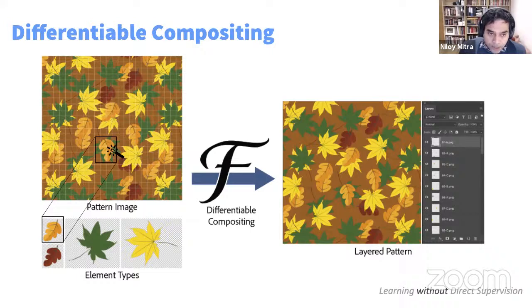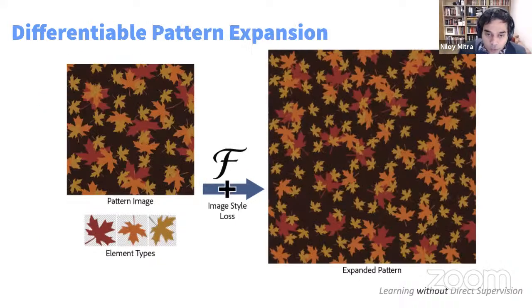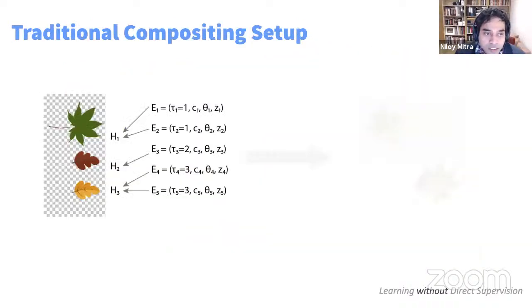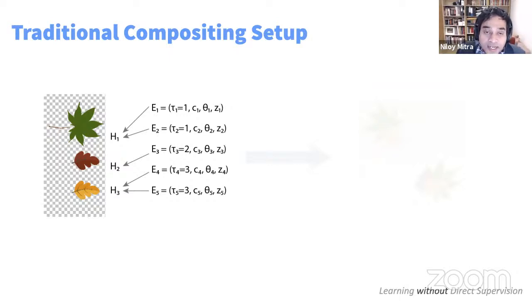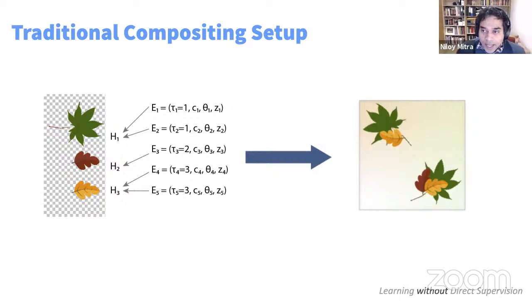Once we can do this, we can perform easy search-and-replace operations to produce new patterns, even with scaling and rotation. The parameterization is: for each element, we have a type, a center location c_i, an orientation theta (one degree since it's 2D), and z_i — the depth ordering — which determines if an element is occluded by another. This handles an unknown number of elements. In the forward pass, we can take this and render it.